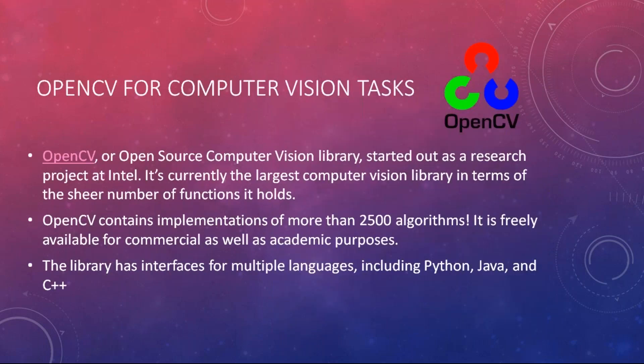So what is OpenCV and why is it being used for computer vision tasks? OpenCV is basically an open source computer vision library that has been funded by Intel. It's one of the largest libraries in terms of functions available — it has over 2500 algorithms. The good thing about OpenCV is that it can be used in multiple languages like Python, Java, C, and C++.